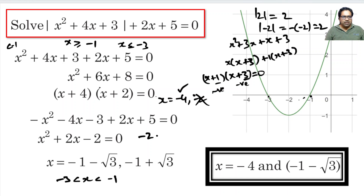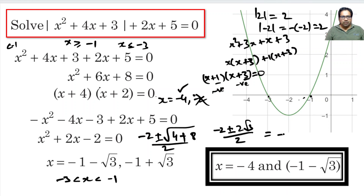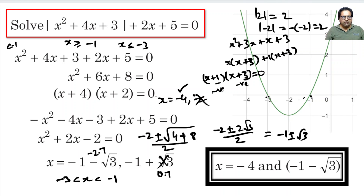This is again a quadratic equation. Using the quadratic formula: minus b plus or minus root of b squared minus 4ac, we get 4 minus 4 times minus 2, which is 8 under the root. So x equals minus 2 plus or minus 2 root 3, all divided by 2, which equals minus 1 plus or minus root 3. Root 3 is roughly 1.7. So minus 1 plus 1.7 is roughly 0.7, which is not between minus 3 and minus 1 — that root is invalid. But minus 1 minus 1.7 is roughly minus 2.7, which lies between minus 3 and minus 1 — so this root is valid.